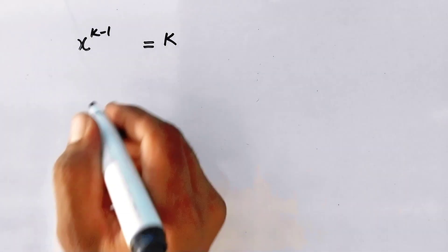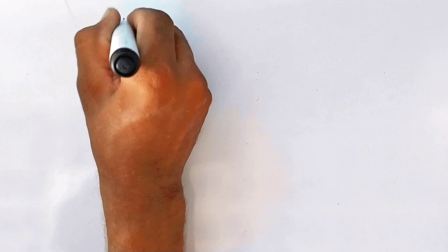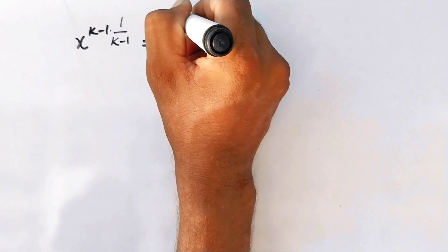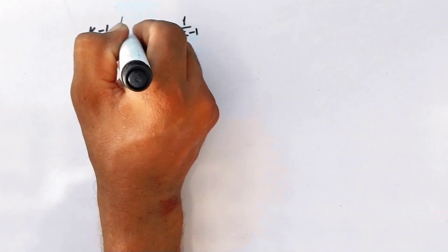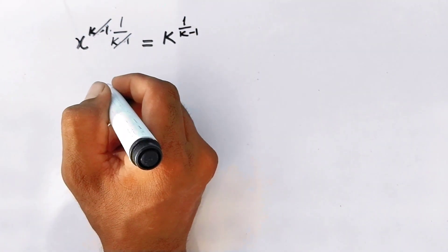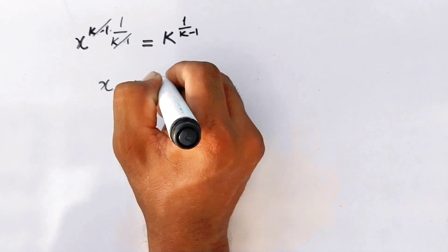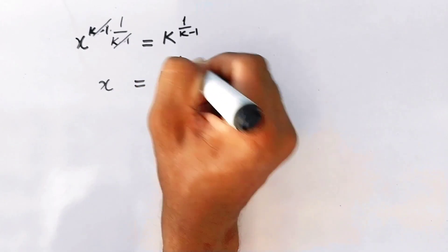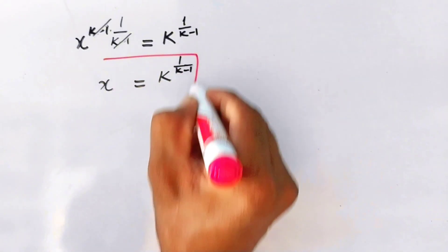Now we will multiply the power on both sides by 1 over k minus 1. This will cancel and it will become x is equal to k raised to power 1 over k minus 1, and that is the value of x.